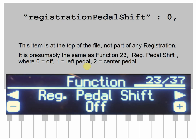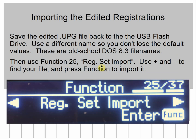Registration pedal shift is at the top of the UPG file and is not part of a given registration — it's presumably the same as function 23, just whether you want to use left or center pedal to change from one registration to the next. Once you've made your edits, save the file back to the USB stick — probably use a different name so you don't lose the defaults. Use old-school DOS 8.3 file names with no spaces. Then use function 25 on the piano to import it. You can navigate subdirectories on the USB stick using the function and exit keys.